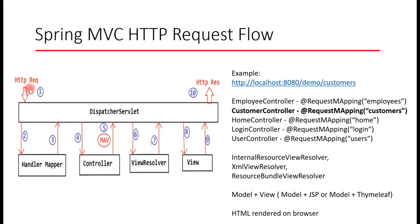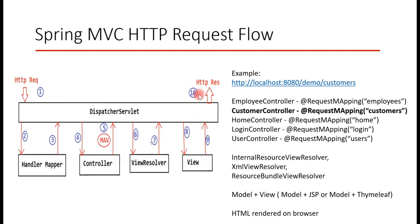The DispatcherServlet finally sends that HTML page as a response to the browser for rendering. This is the typical flow in a Spring MVC application. To recap: all requests first come to the DispatcherServlet, which consults the HandlerMapper to identify the controller. The HandlerMapper returns the controller details, the DispatcherServlet sends the request to that controller, the controller creates a model and returns a model and view, the DispatcherServlet uses the ViewResolver to locate the view, and finally sends the view and model to the view component, which produces an HTML page that is sent back to the browser.